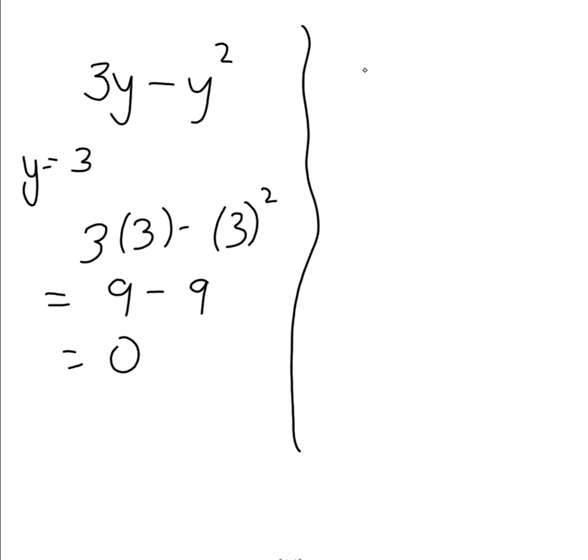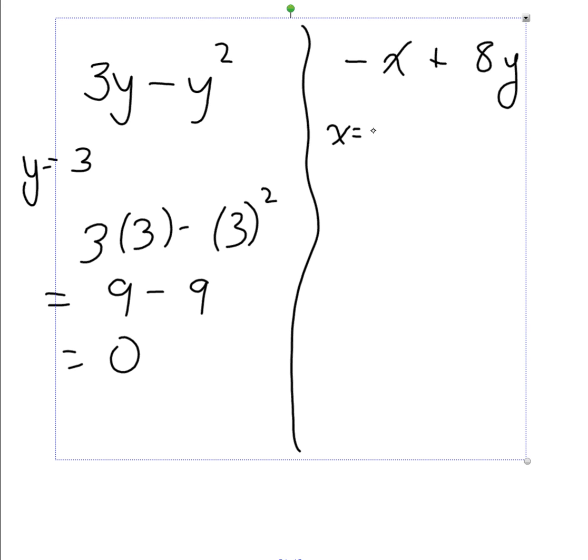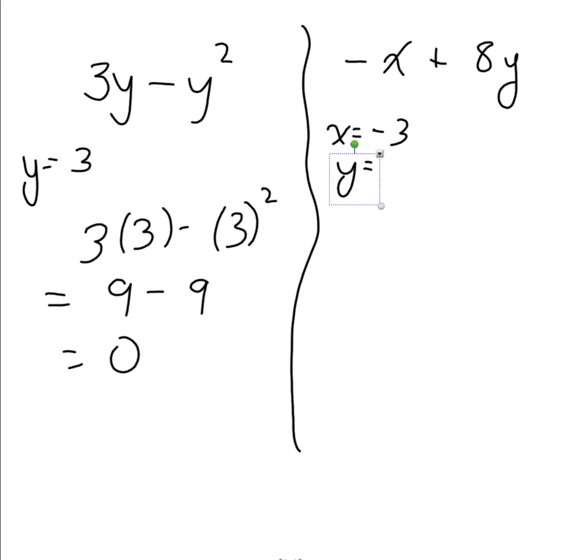Here, I could have negative x plus 8y. What if I said that x was negative 3 and y was 2? To do that one, again, I'm going to replace the x with what it is. Now watch this one. This one's a little bit tricky.